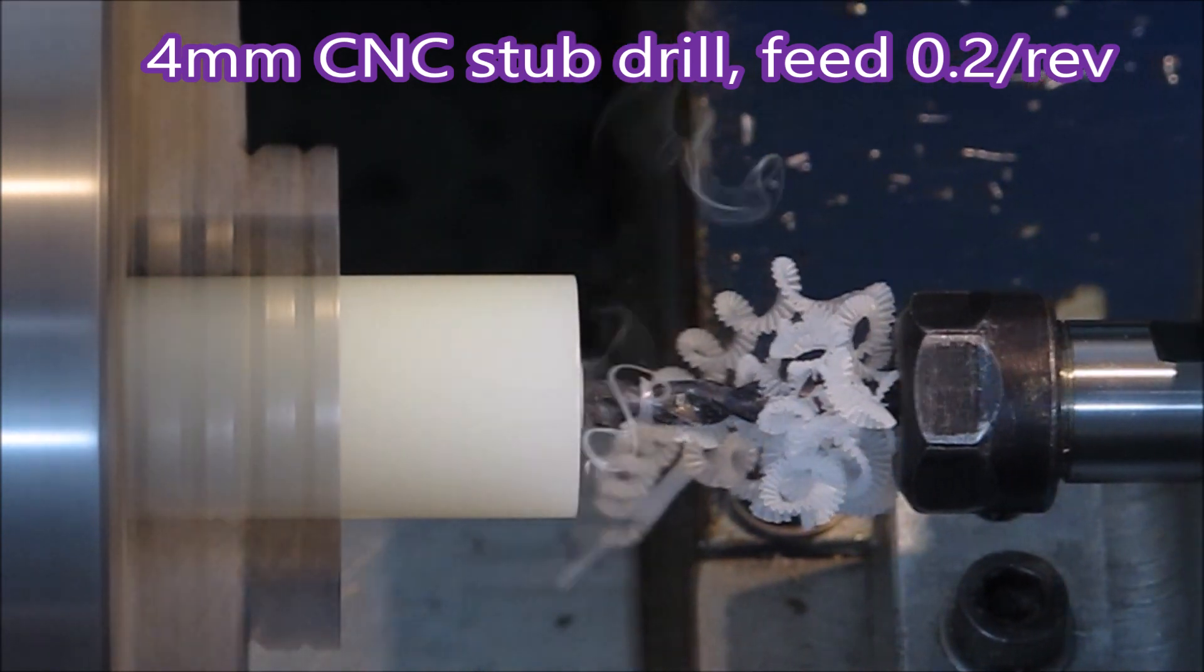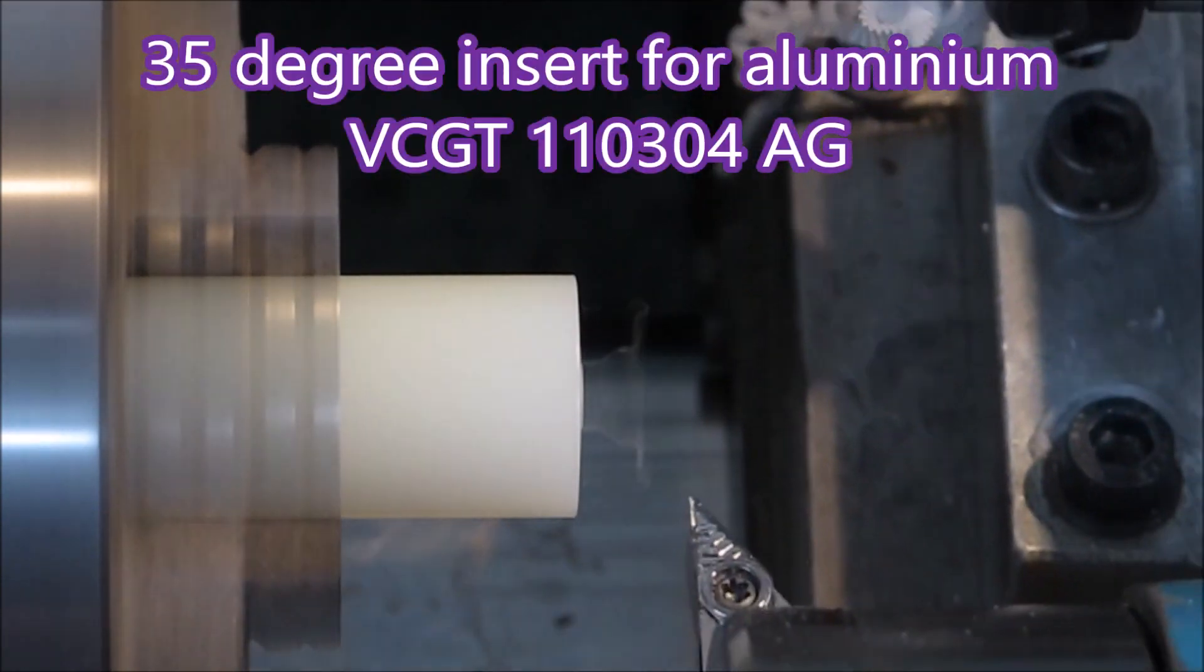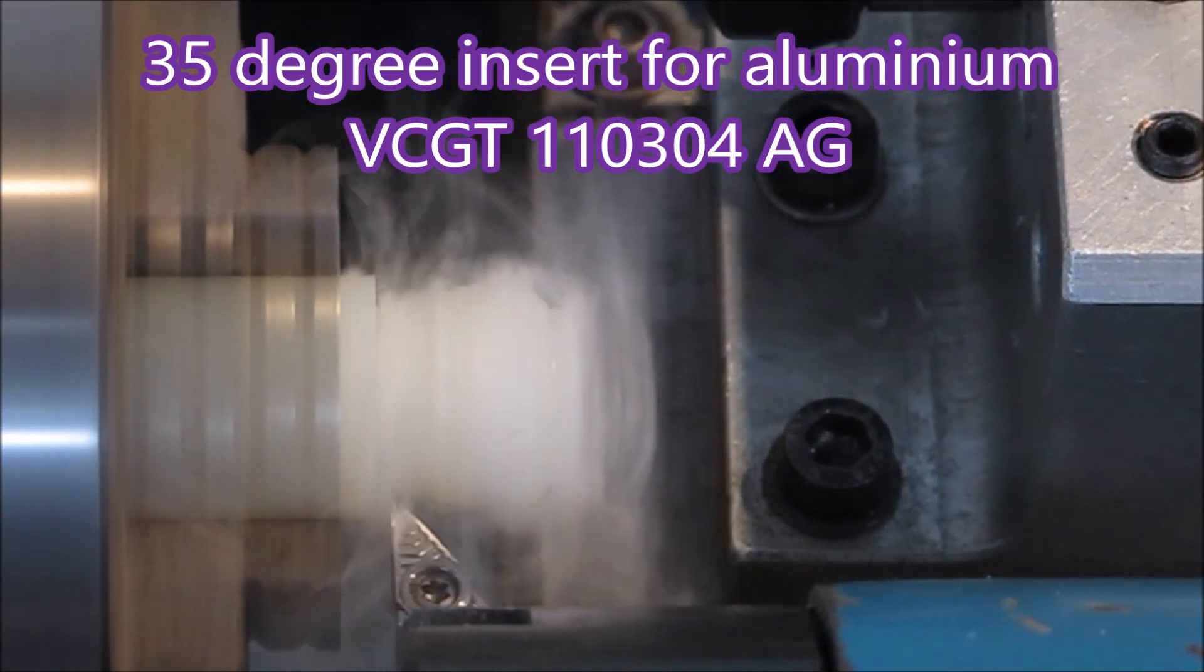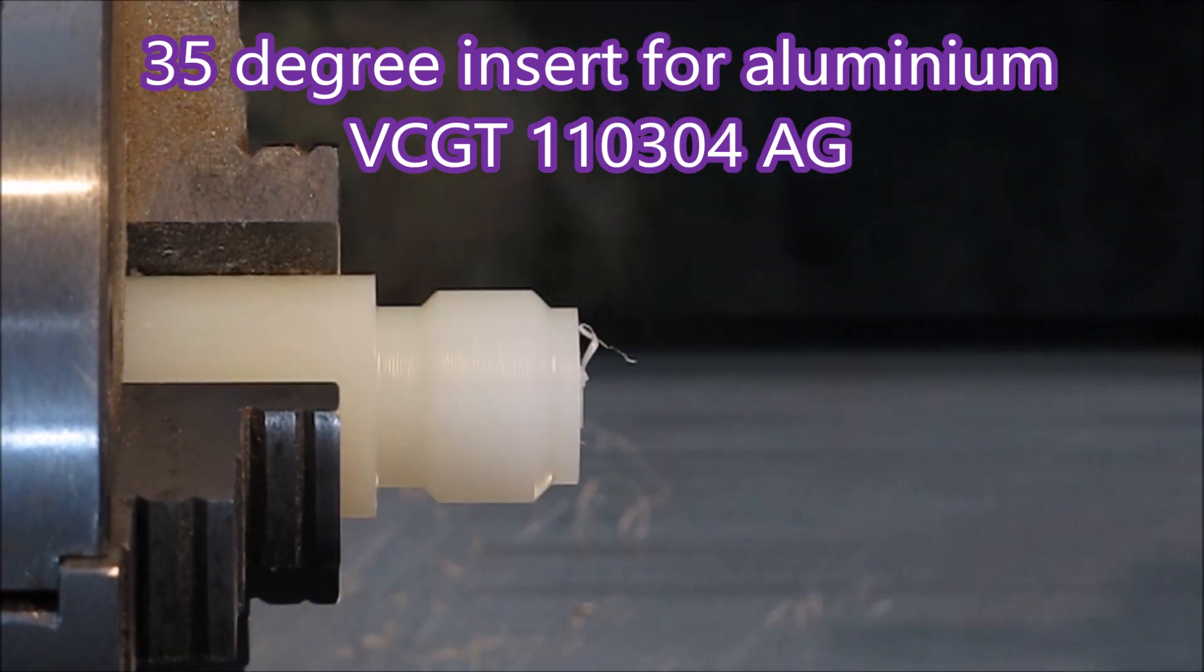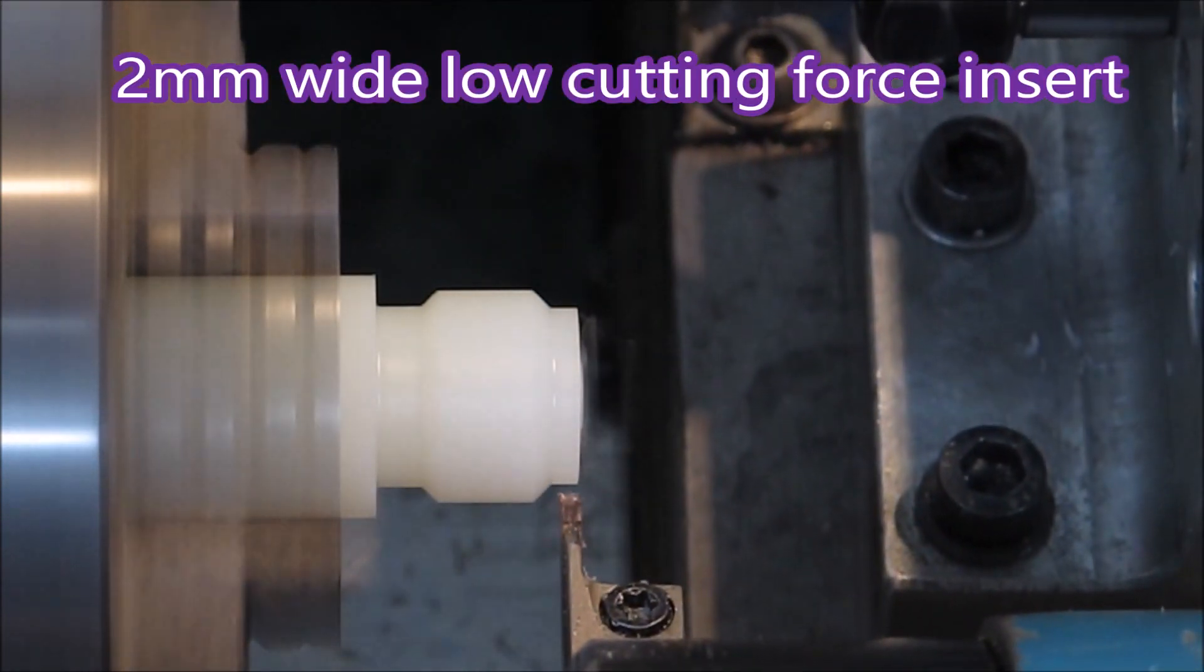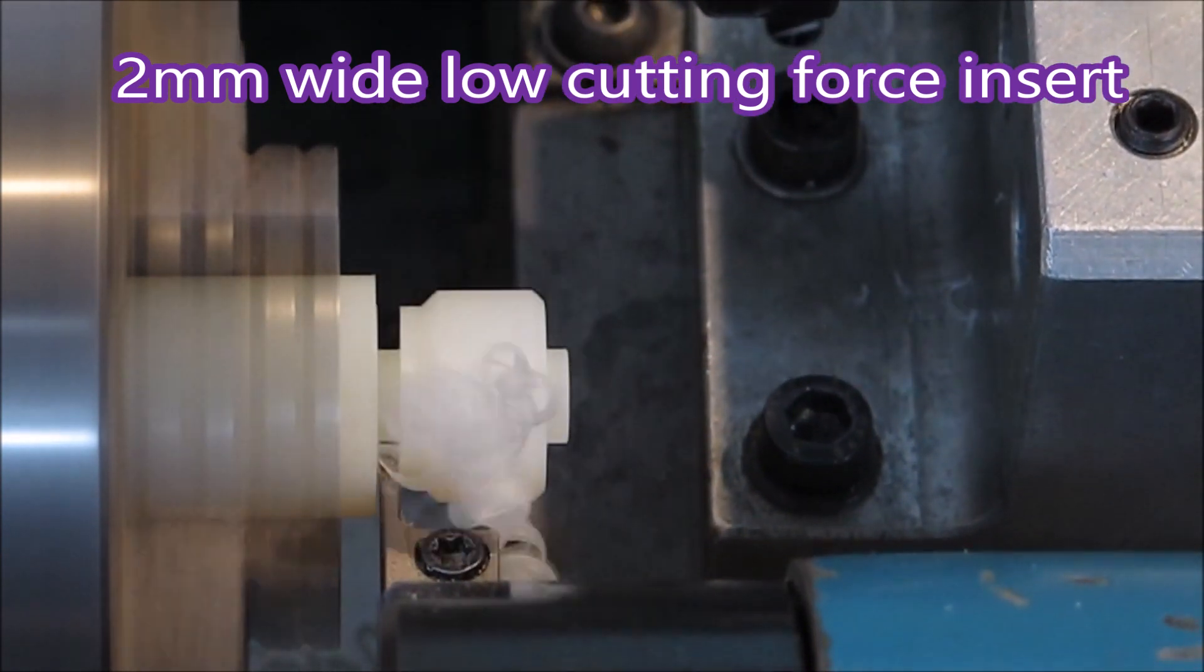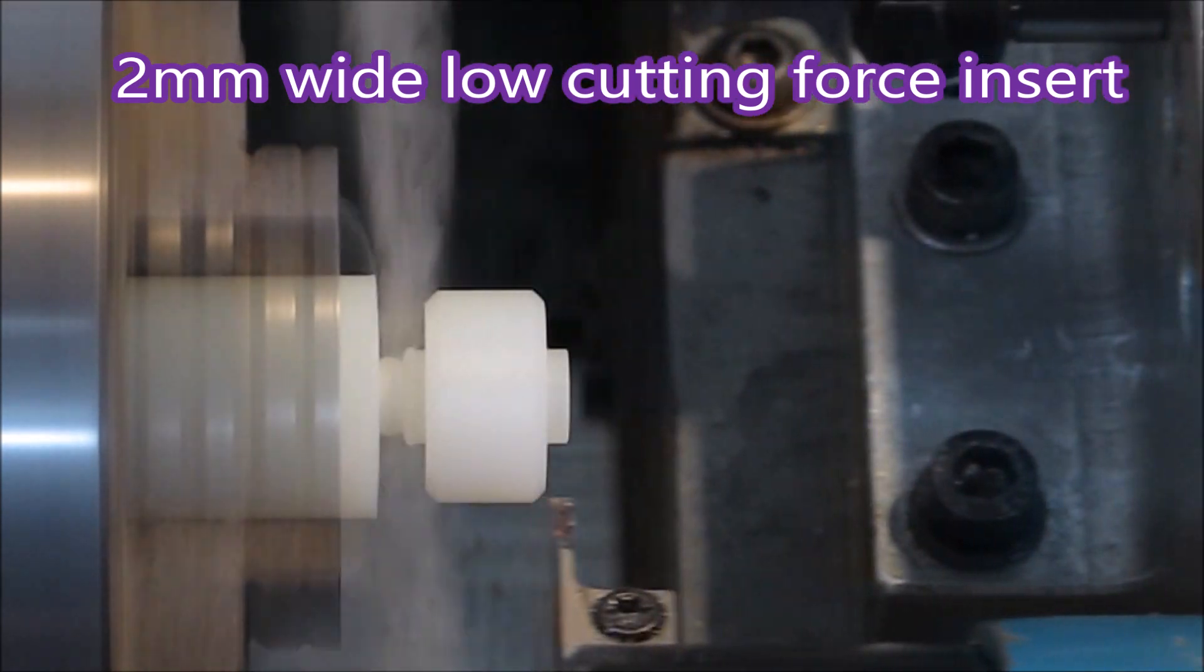That's a four mil CNC stub drill. They cut beautifully, doesn't matter what you need to cut, they cut beautifully, they're really good. That insert was a VCGT with an AG code on the end in Sumitomo's language. The AG makes it an insert for cutting aluminum. There's one of my parting tools at work, that's a Sumitomo tool as well.